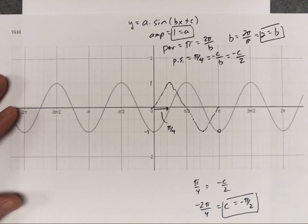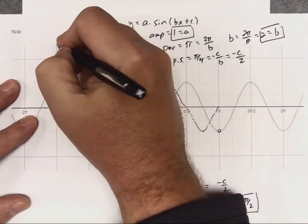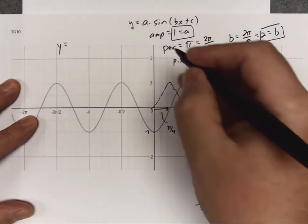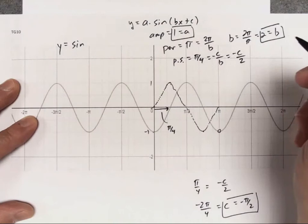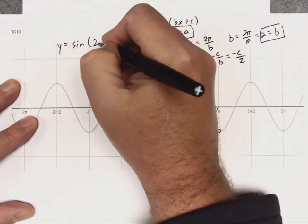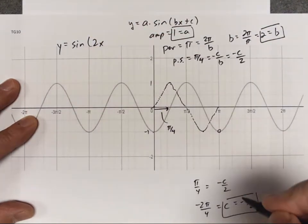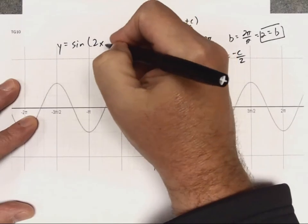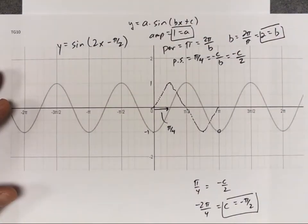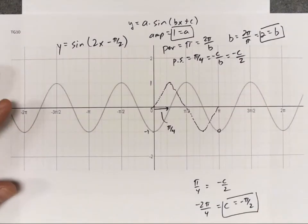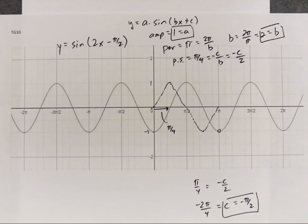We know phase shift equals negative c over b, and b is 2. So pi over 4 equals negative c over 2. Multiplying both sides by negative 2 gives c equals negative pi over 2. Now I know a, b, and c, so the equation for this graph is: a is 1, so sine, b is 2, giving sine of 2x, and the phase shift is negative, so the equation is y equals sine of 2x minus pi over 2. Hopefully once you start doing some of those, you get the hang of it and it won't be too difficult.